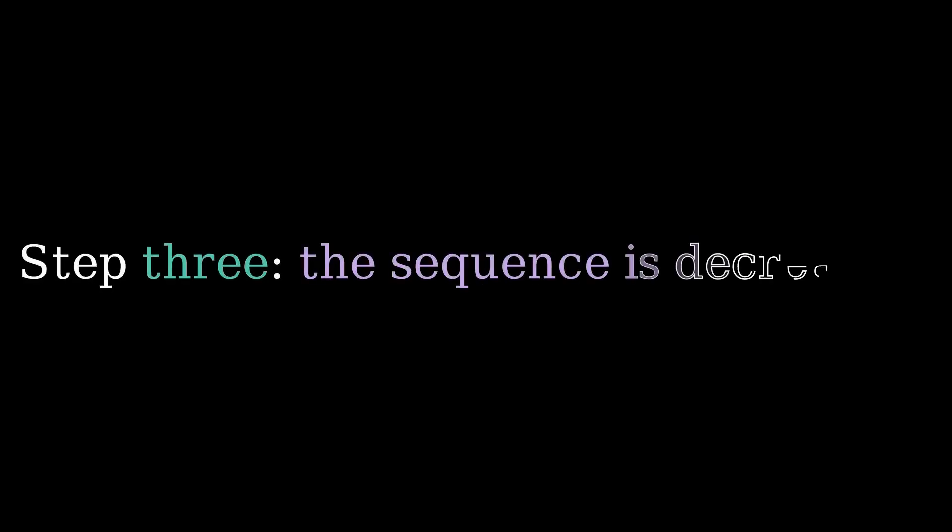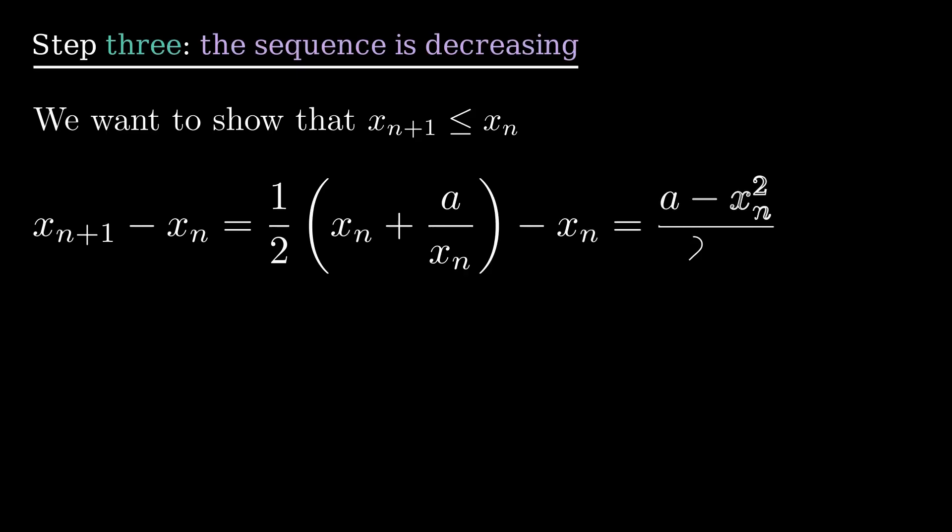Step 3. The sequence is monotonically decreasing. Calculate the difference between two consecutive terms. From step 2. Since xn squared is greater than or equal to a, the numerator is less than or equal to 0, and the denominator is positive because xn is positive. Therefore, the sequence is decreasing.